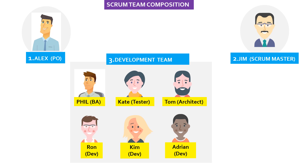The third role is the development team. The size can vary from three to nine people. The development team is a self-organized, cross-functional team with all the skills required to turn the product backlog into increments of potentially releasable functionality. Scrum recognizes no titles for development team members regardless of the work performed. It comprises developers, testers, a business analyst, and a solution architect. The team includes: business analyst Phil, developers Ron, Kim, and Adrian, tester Kate, and solution architect Tom.